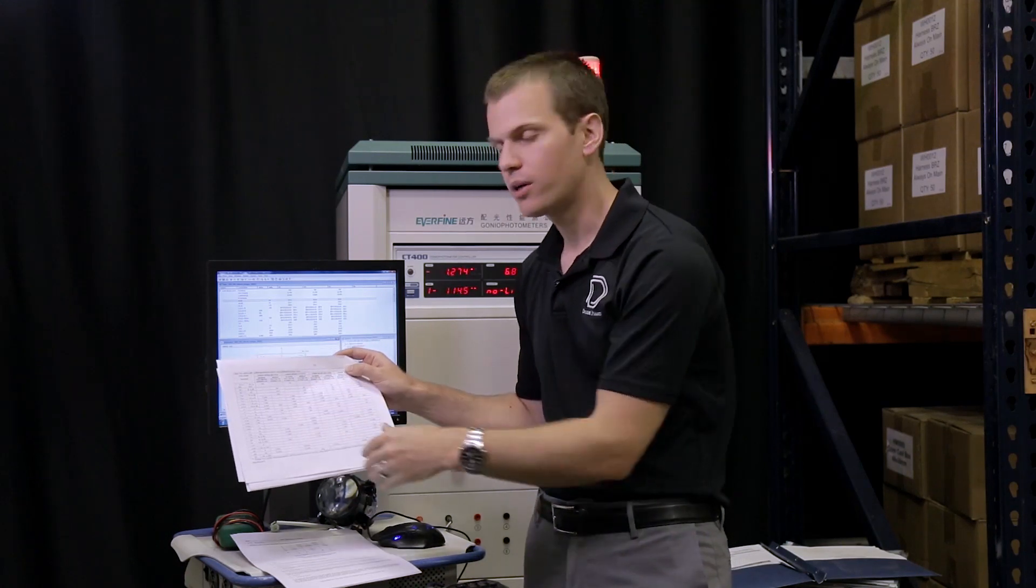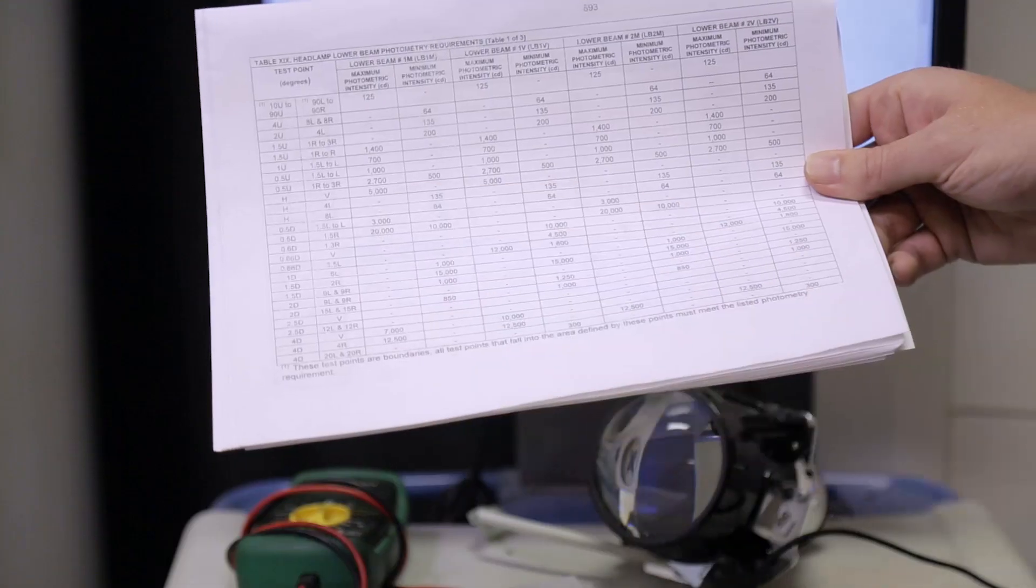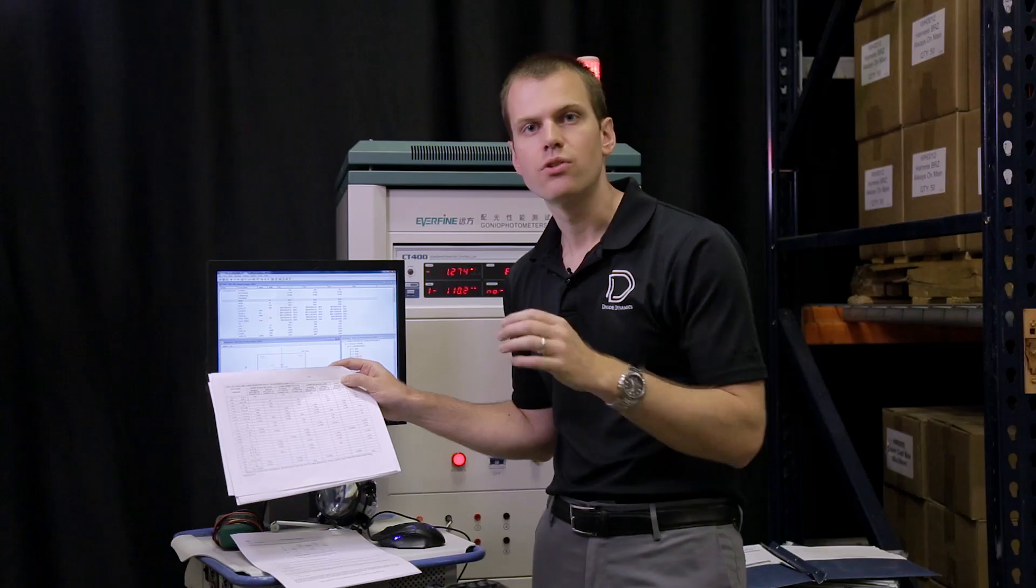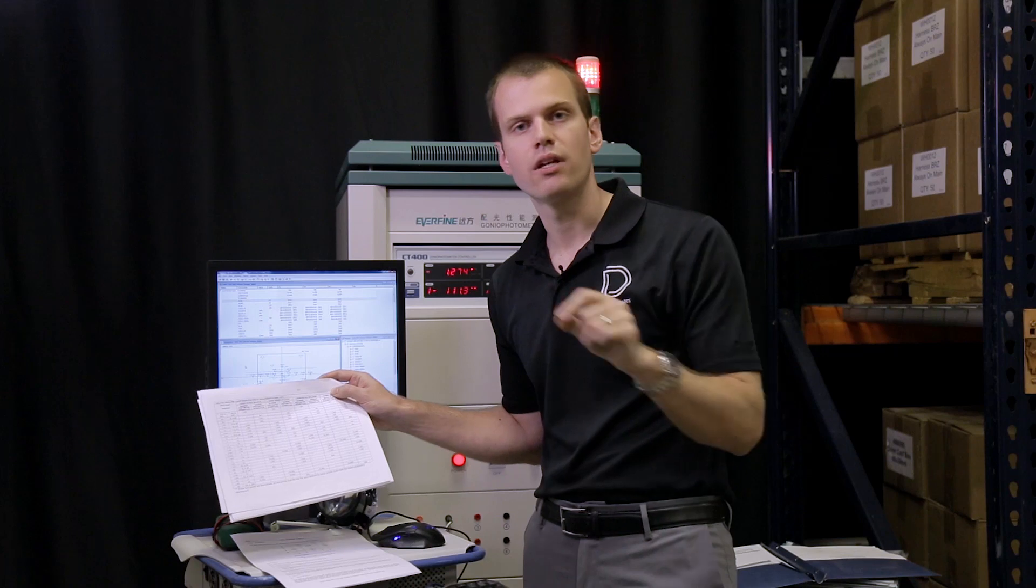So for example one test point would be two up and four left and for that we have to have a minimum value of 135 candela. So we need to go through and test each and every one of these points.